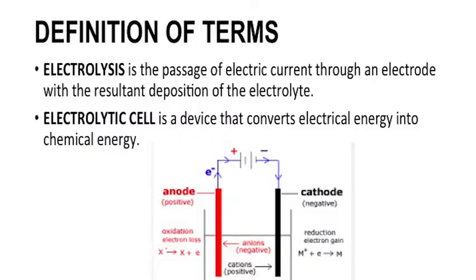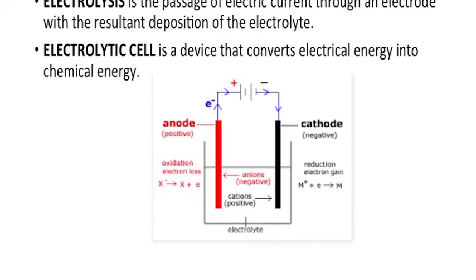I will start with the definition of electrolysis. Electrolysis is the passage of electric current through an electrode with the resultant decomposition of the electrolyte. There are two types of cells: the electrolytic cell and the electrochemical cell. The electrolytic cell is a device that converts electric energy into chemical energy. As shown in the diagram, it is made up of two electrodes — the red and the black — and the arrow shows the flow of electrons from the anode to the cathode. The electrolyte is in the base.